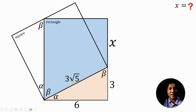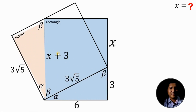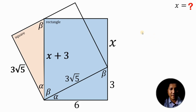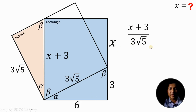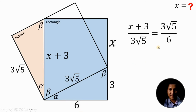Take note that all sides of the square are equal, so this side is also equal to 3 times square root of 5. Also take note that the length of this rectangle is simply x plus 3. Now consider this right triangle — we have the hypotenuse and its longer leg. So we can write the ratio: x plus 3 all over 3 times square root of 5. Since the two right triangles are similar, x plus 3 over 3 times square root of 5 must equal 3 times square root of 5 all over 6.